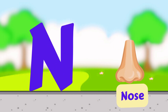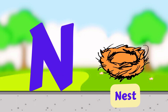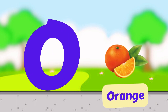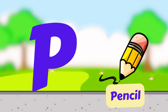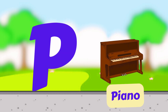N is for Nose. N, N, Nose. N is for Nest. N, N, Nest. O is for Orange. O, O, Orange. O is for Otter. O, O, Otter.